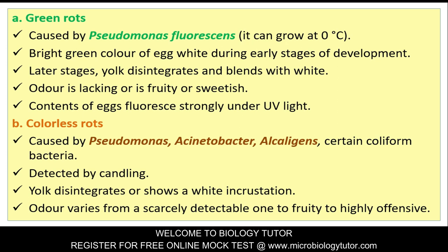Green rot: Caused by Pseudomonas fluorescens. In early stages, bright green color of egg white appears. In later stages, yolk disintegrates and blends with white. Odor is lacking or is fruity or sweet. Egg contents fluoresce strongly under UV light. Colorless rot is caused by Pseudomonas, Acetobacter, Alcaligenes, and certain coliform bacteria.